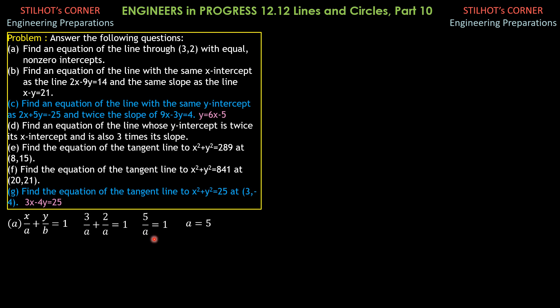Therefore, the equation of the line is x over 5 plus y over 5 equals 1. I just put the answer in intercept form so that it is clear for this problem.